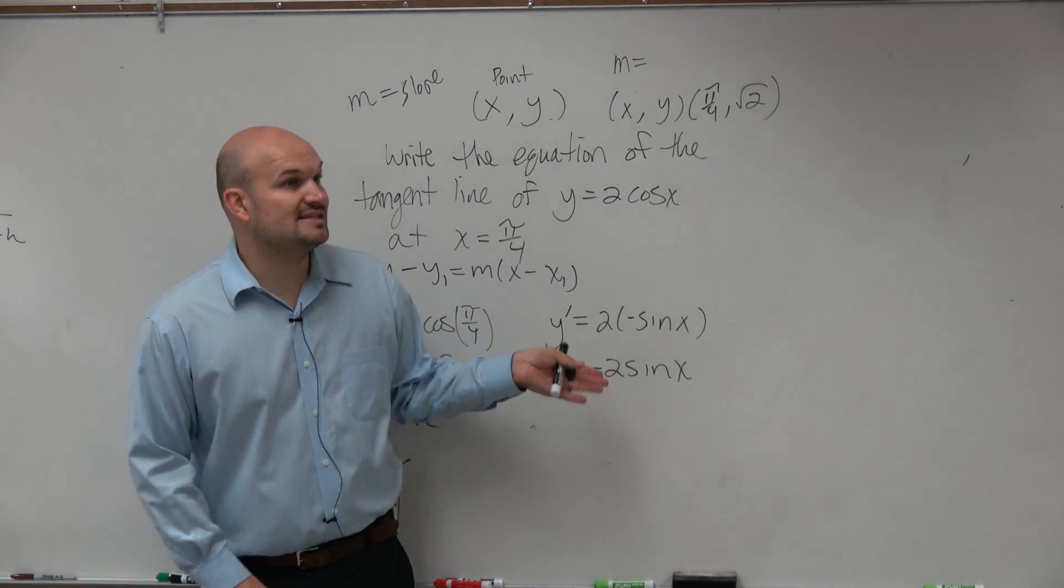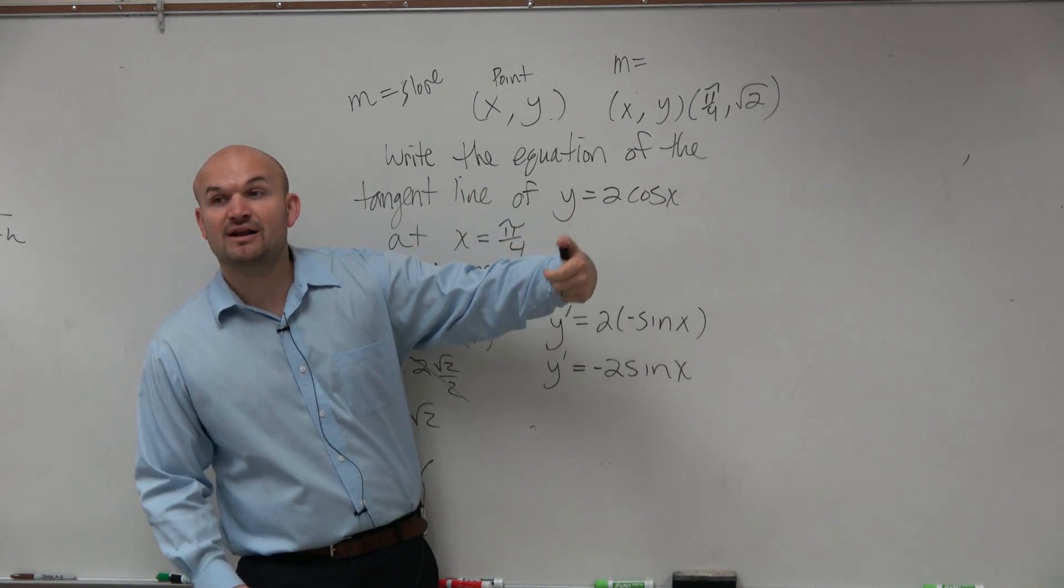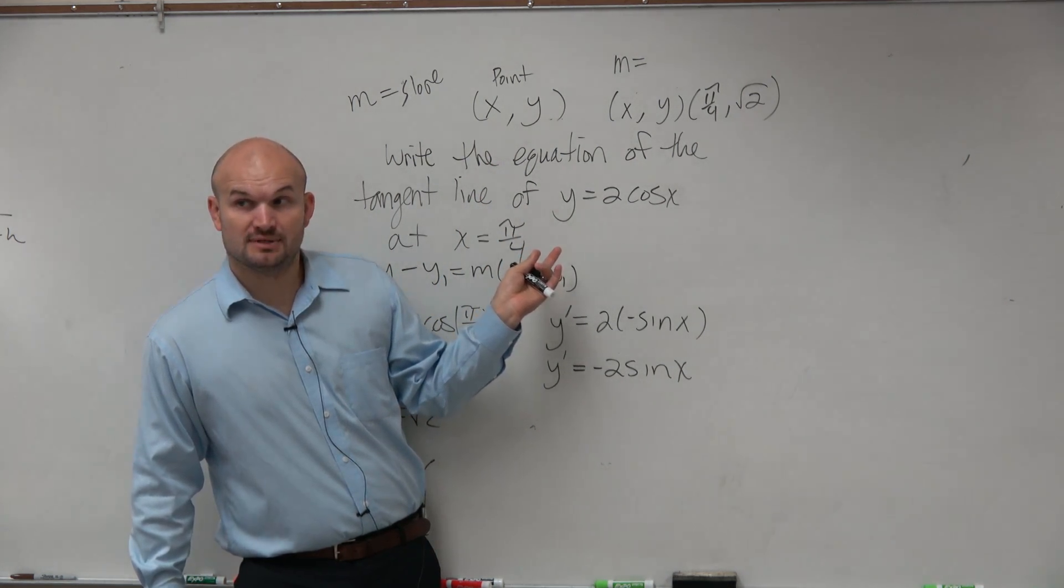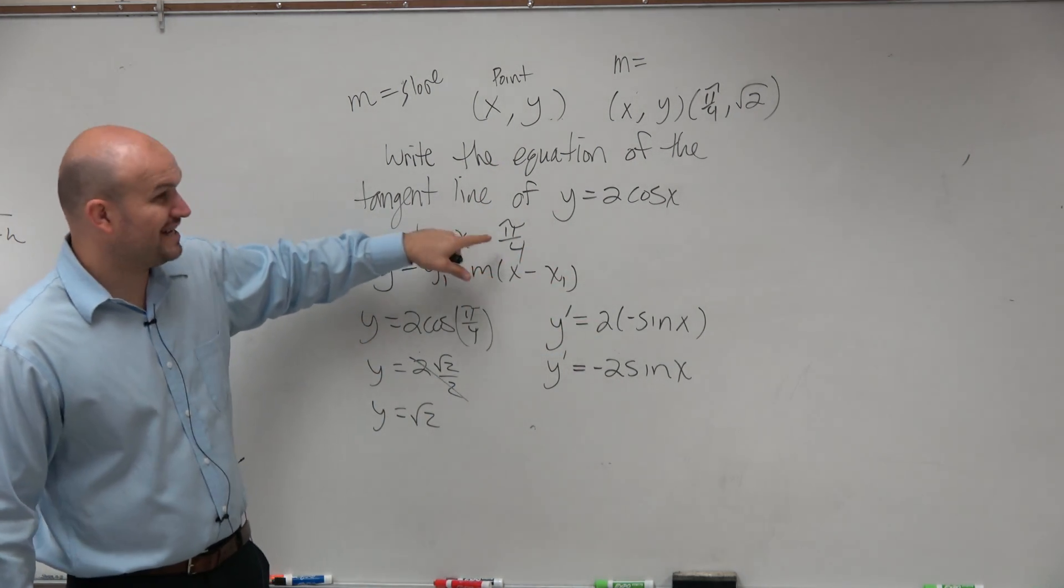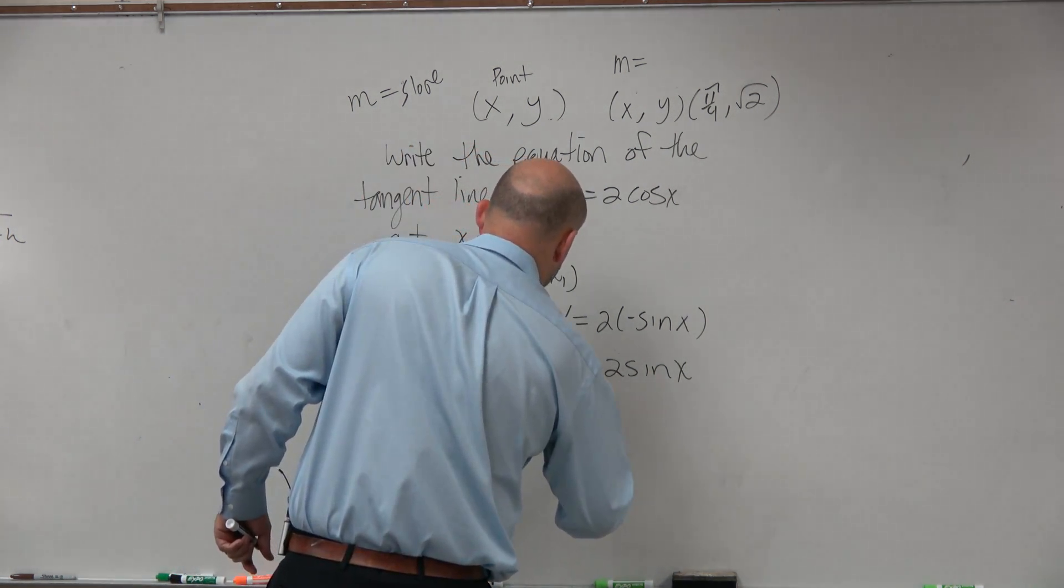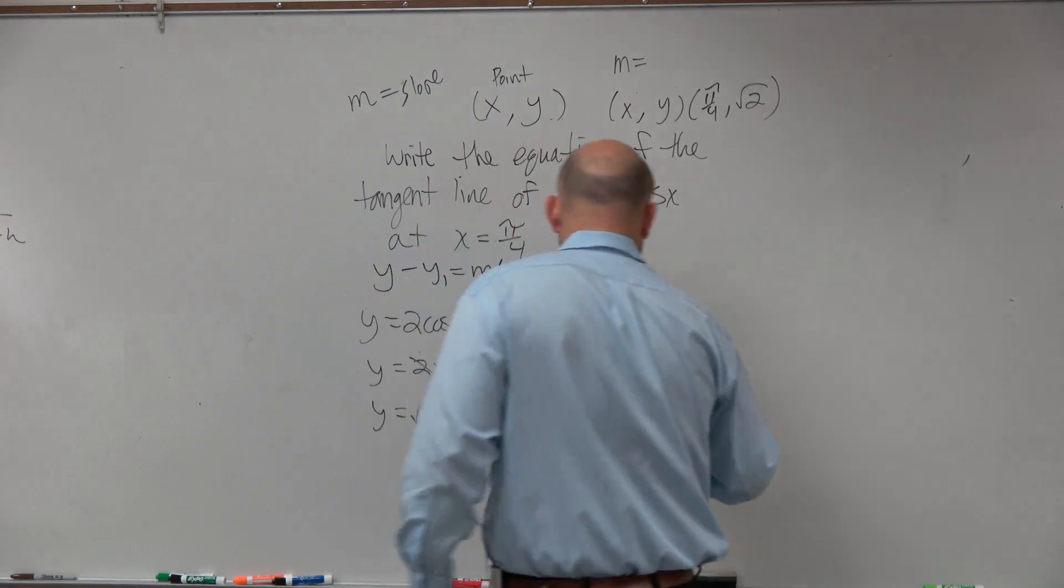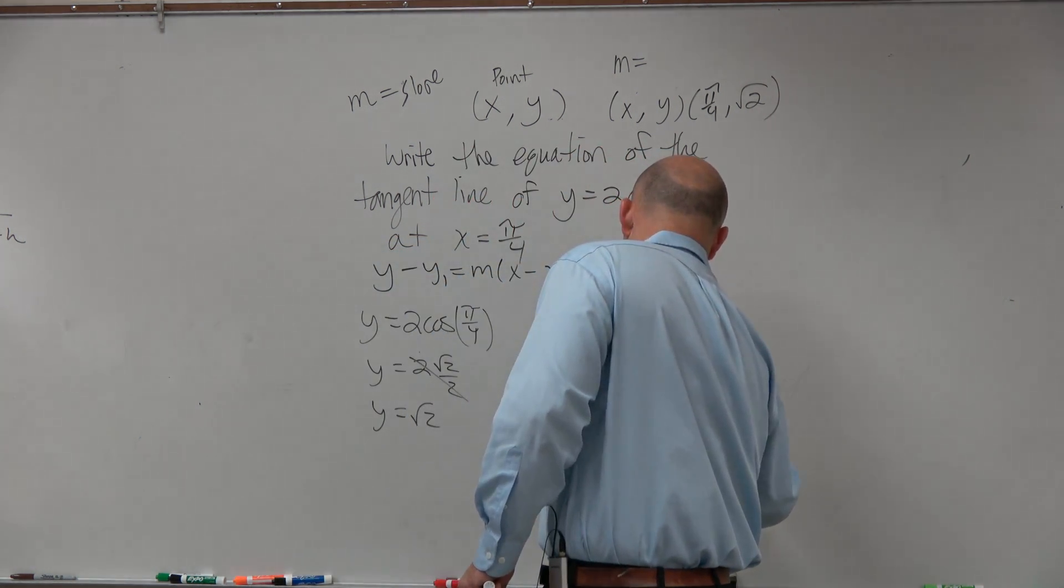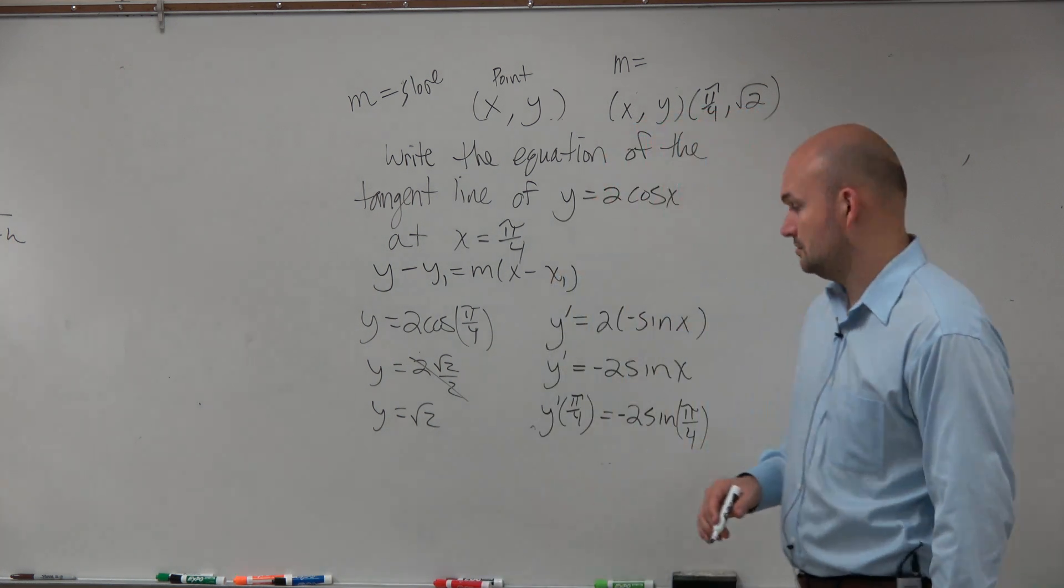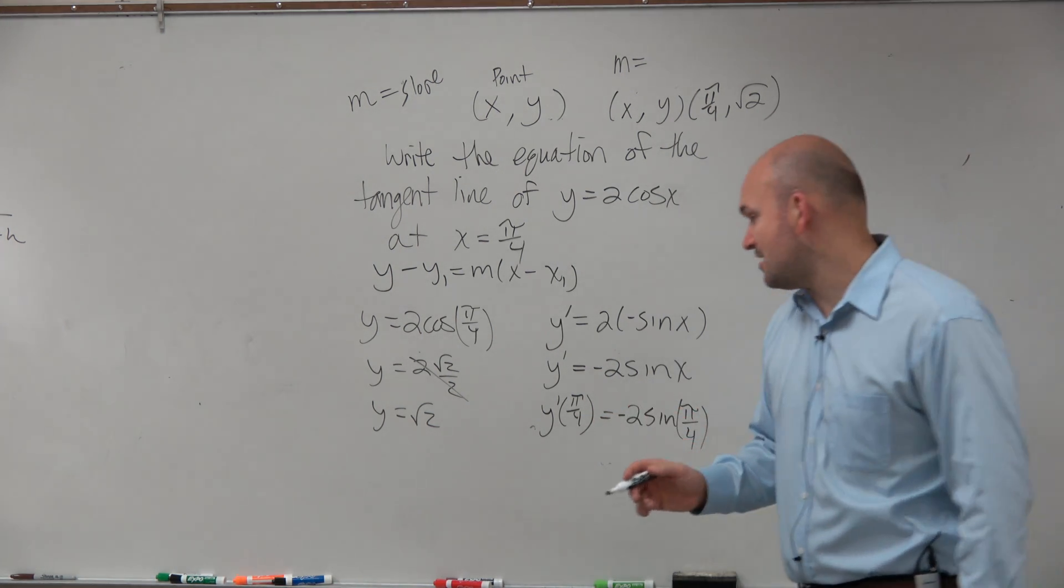However, that is the equation for the slope of the graph. We want to find what is the slope at pi over 4, right? So when we want to find the slope at pi over 4, I need to evaluate my function for pi over 4. So I'm going to do negative 2 times the sine of pi over 4. Now I'm evaluating my tangent function at pi over 4.